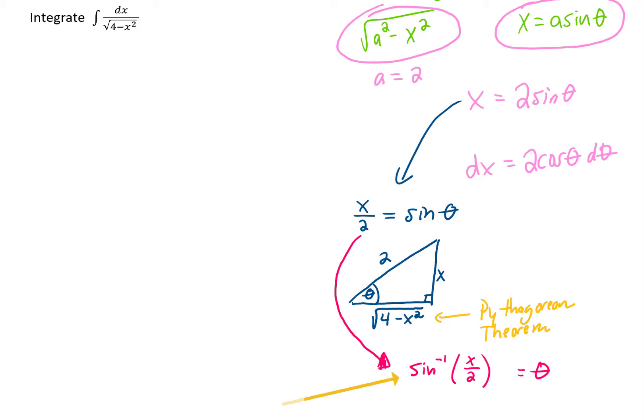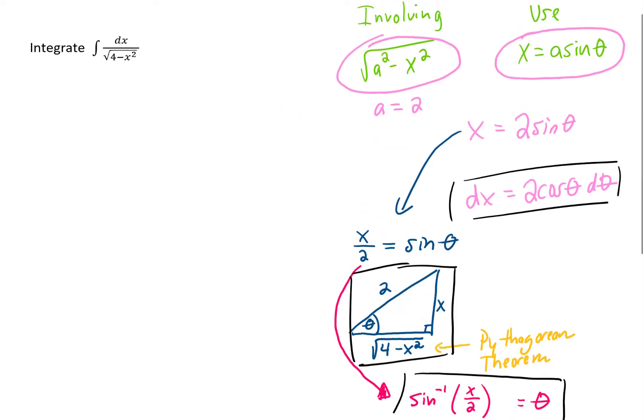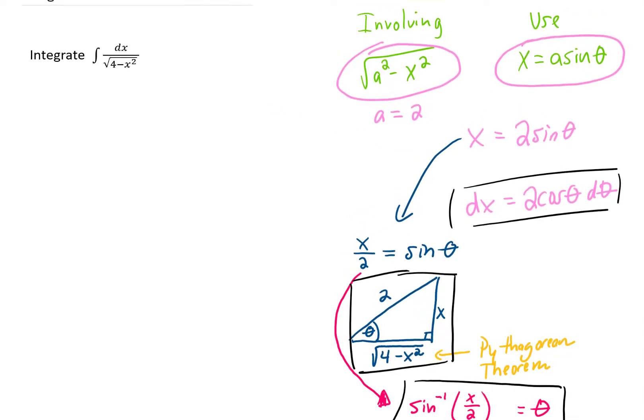So what are we going to use in this problem? We're probably going to use this. We might end up using this triangle right here, it's called a reference triangle. And we are definitely going to use this dx right here. Let's go back and take a look at the original problem.